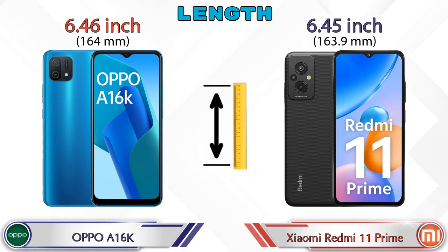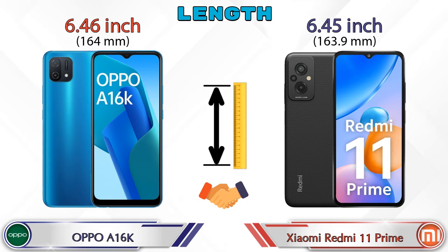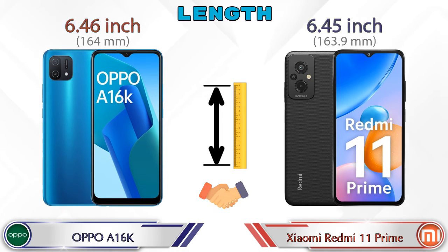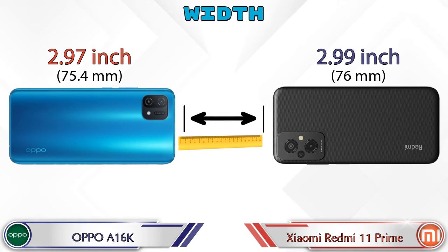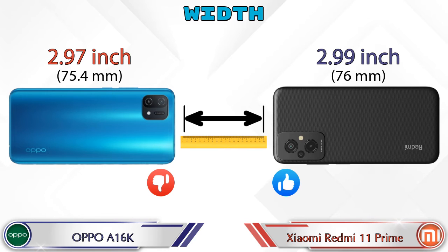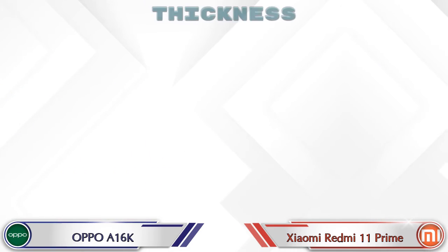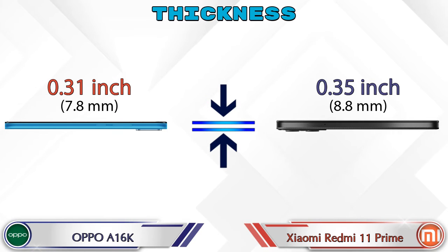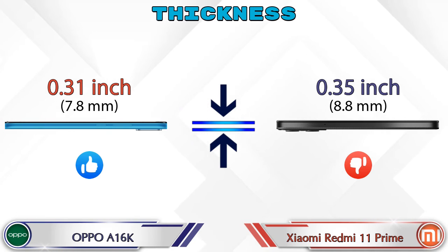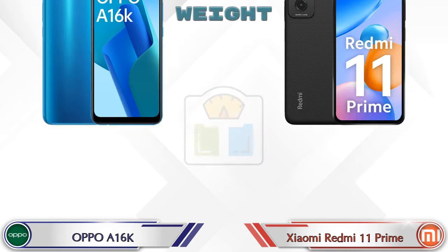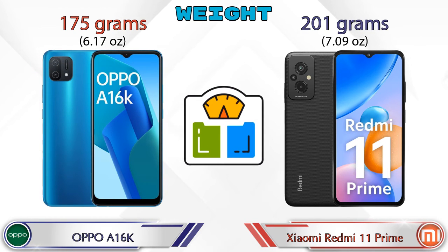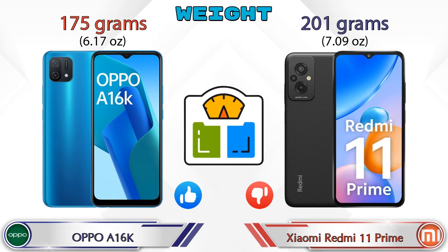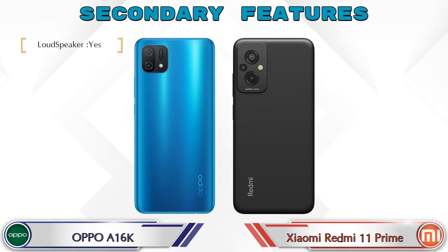Talking about the length of both phones, the A16K is 6.46 inches and Xiaomi Redmi 11 Prime is 6.45 inches, which are almost the same. Width: the A16K is 2.97 inches and Xiaomi Redmi 11 Prime is 2.99 inches. Thickness: the A16K is 0.31 inches and Xiaomi Redmi 11 Prime is 0.35 inches, which is bigger than the A16K. Weight: the A16K is 175 grams and Xiaomi Redmi 11 Prime is 201 grams, which is heavier than the A16K.